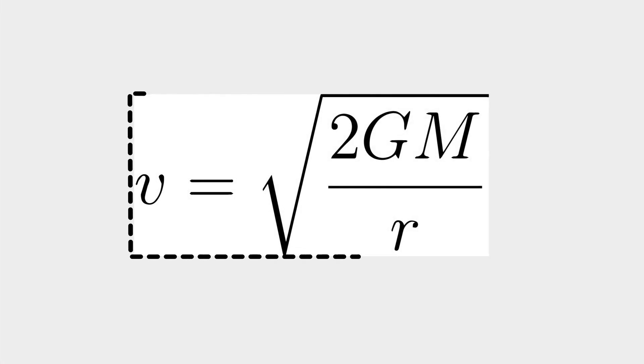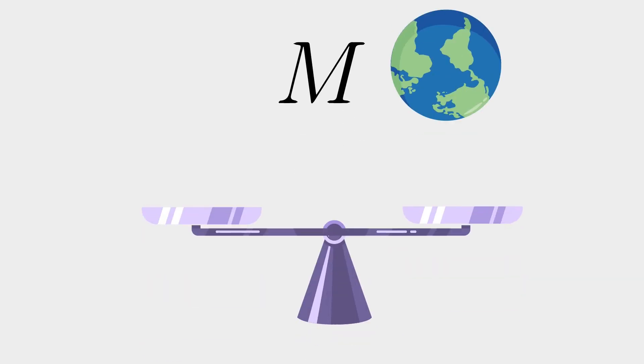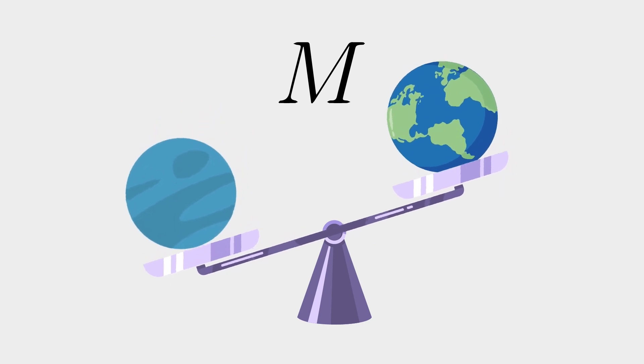Escape velocity depends on a number of factors and one can compute it using the equation. The m in the equation represents the mass of the planet. Planets with more mass are harder to escape than planets with less mass. The r in the equation represents the radius, which is the distance between the center of the planet and the object that is trying to escape.